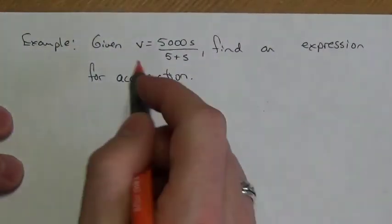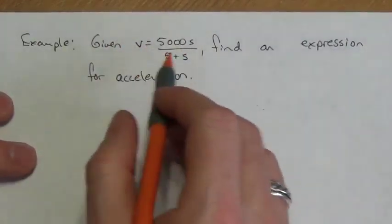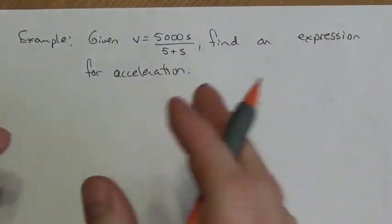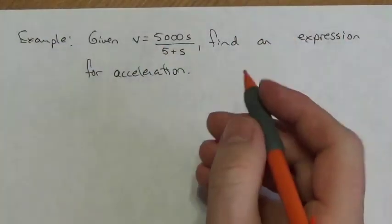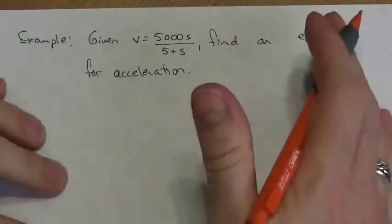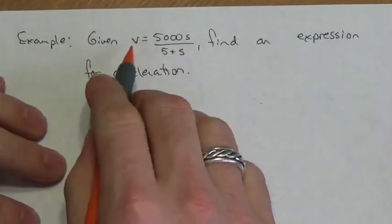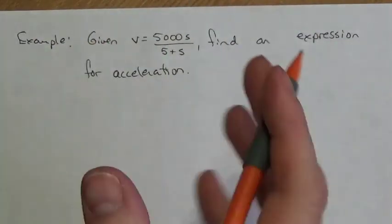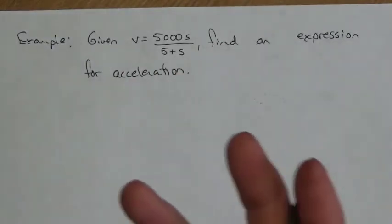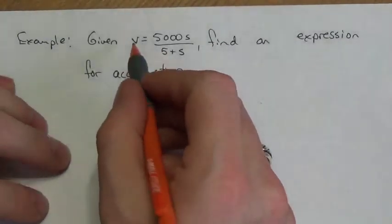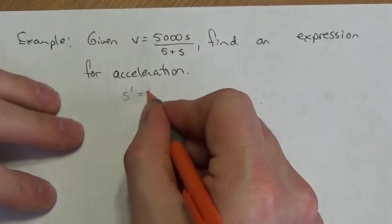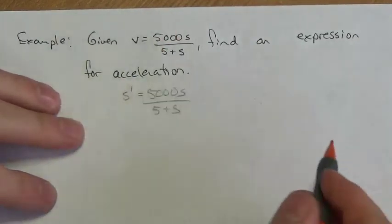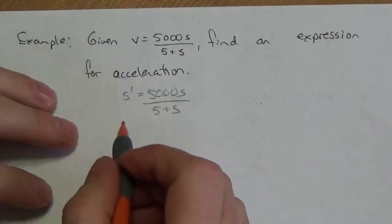Let's take another very similar example. Given that velocity equals 5000s over (5 + s), we're going to find an expression for acceleration. We take the first derivative of both sides. I'm going to write v as s′ to help clarify — all I've done is rewrite that first expression with a derivative symbol instead of v.